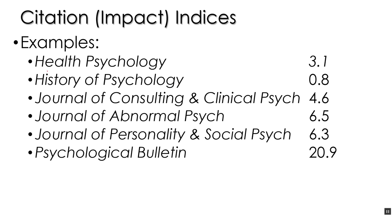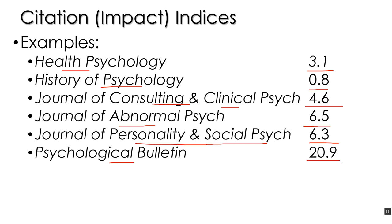In psychology, here are some example impact factors as rubrics. Health Psychology: 3.1. History of Psychology: 0.8. Journal of Consulting and Clinical Psychology, one of the bigger clinical journals: 4.6. Journal of Abnormal Psychology: 6.5. JPSP, one of the biggest in psychology: 6.3. And Psychological Bulletin: 20.9. Psychological Bulletin has that huge impact factor because they publish many literature reviews and meta-analyses, which people cite all over the place. These numbers are good rubrics for the sizes of impact factors you'd expect from psychology journals.